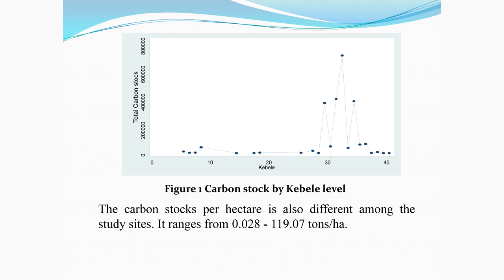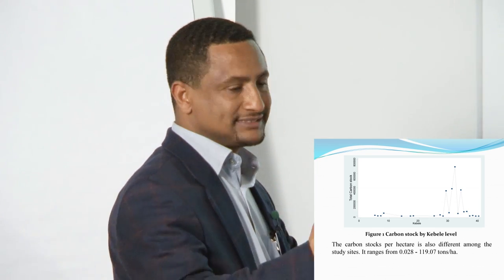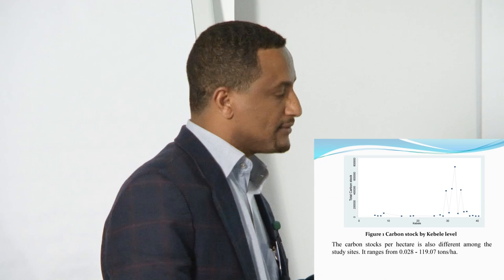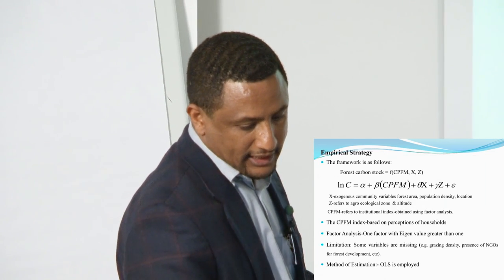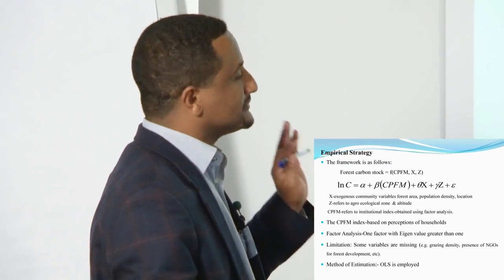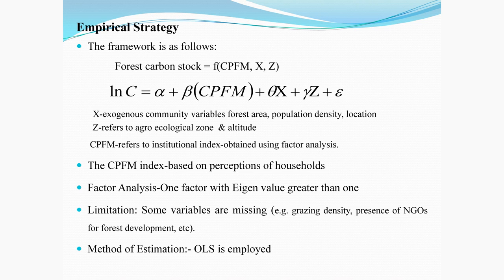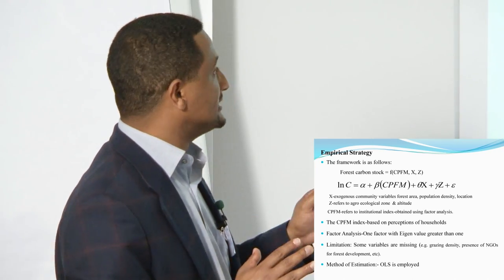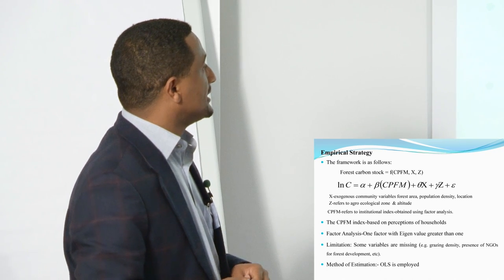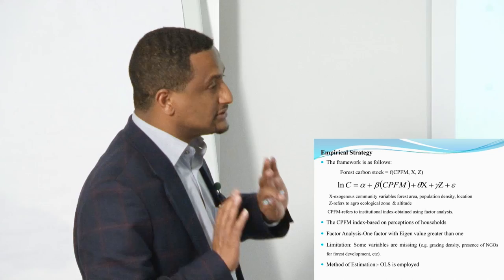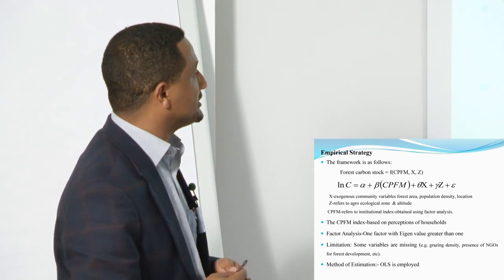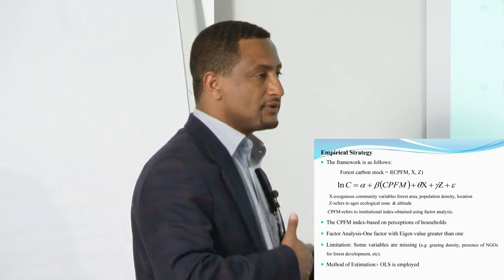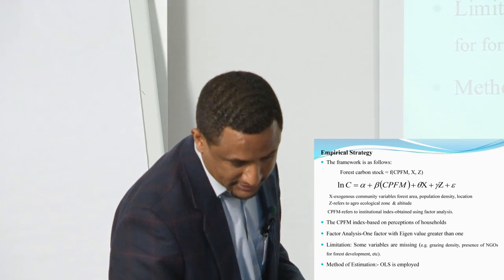The empirical strategy uses a simple OLS regression of carbon stock per hectare versus CPFM, other exogenous community-level variables, and agroecological zones, plus a disturbance term. The CPFM index is based on perceptions of householders; to construct it we used factor analysis and obtained one factor with eigenvalue greater than one. A limitation is that some variables we wanted to include — like grazing density and the presence of NGOs for forest development — could not be included due to lack of data.